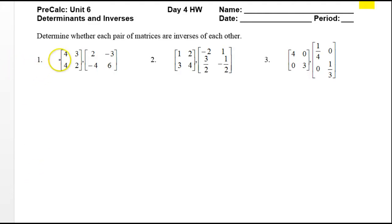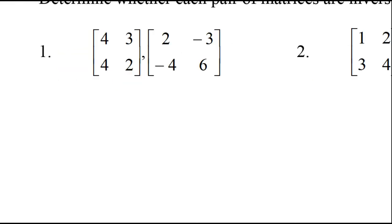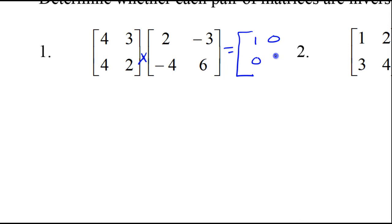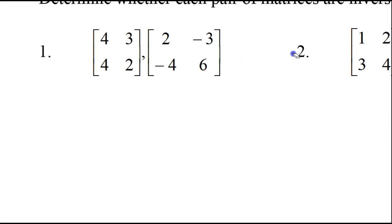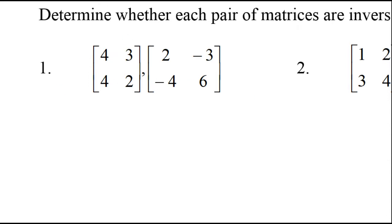In this video, I will show you how to determine if two matrices are inverses of each other. If I were to multiply these two matrices together and I got the identity matrix — which is 1, 0, 0, 1 — that would mean that these two matrices are inverses of each other. So if I get anything else, then I will say no, they are not inverses of each other. So all we really need to do is multiply these two matrices together and see what we get.